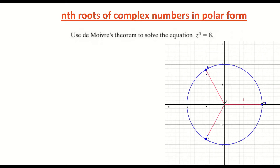Before we get into actually solving this equation, I've put up a diagram of the answers. Because the question is z to the power of 3, there are going to be 3 solutions or 3 roots — I've called them z1, z2 and z3 on the diagram. If this was z to the power of 4, you would have 4 roots, or z to the power of 2, 2 roots. You'll also notice that the angle between each of these complex numbers is the same size, so the circle is broken into 3 equal segments.